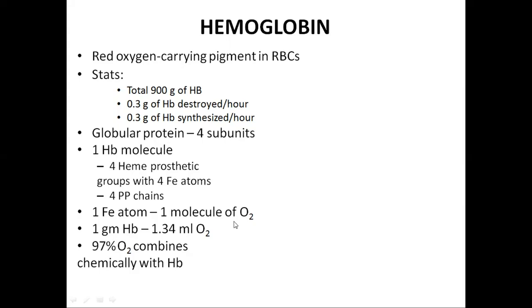Each iron atom will combine with 1 molecule of oxygen. So 4 iron atoms will combine with 4 oxygen molecules, and in turn an HbO8 molecule is formed. Hemoglobin has a capacity of transporting almost 97–98% of oxygen to the tissues, combining chemically with hemoglobin.